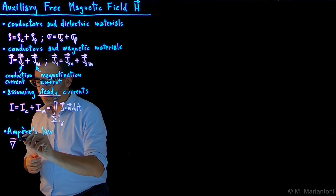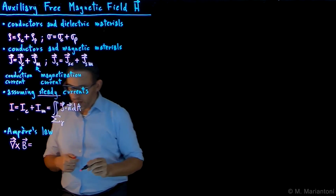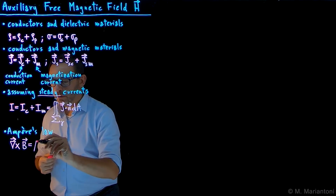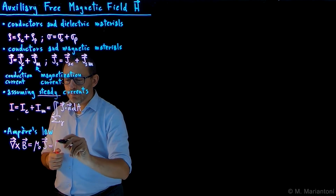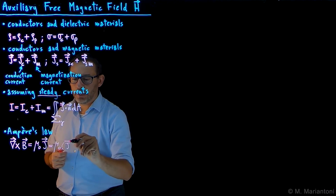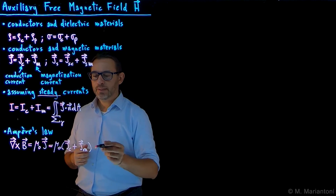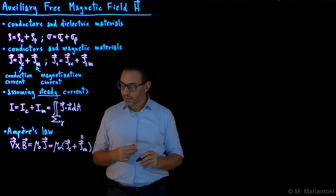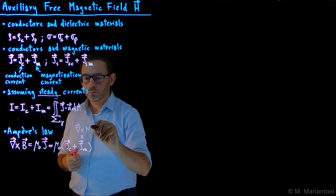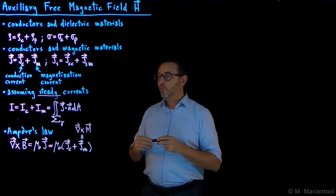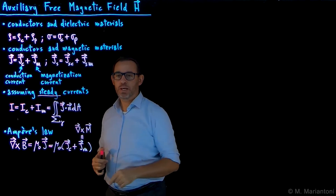We know that J is given by the linear superposition of Jc plus Jm, and from previous videos we have demonstrated, using a simple model, that Jm is equal to the curl of M, M being the magnetization vector. Therefore, we can rewrite this expression by dividing everything by μ₀ and replacing Jm with the curl of M.